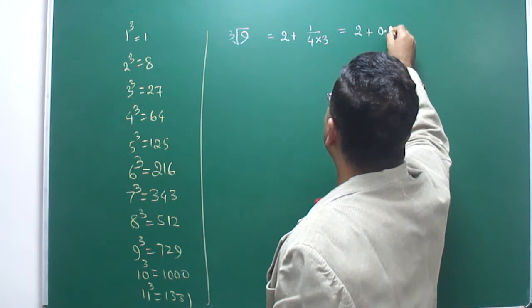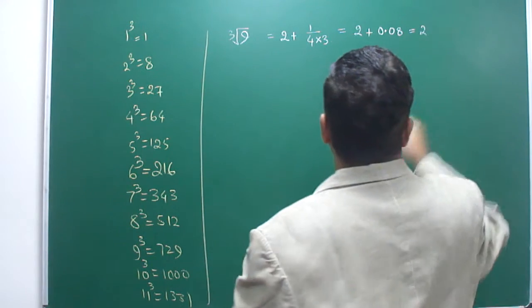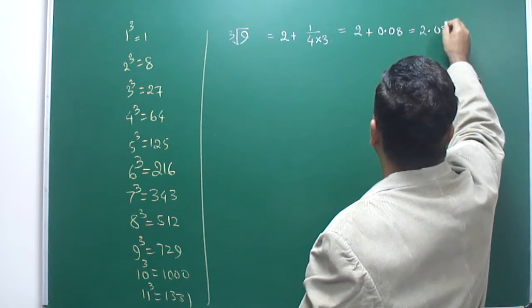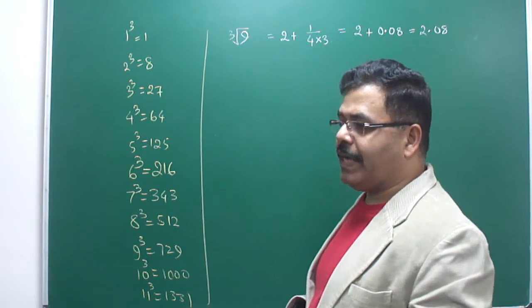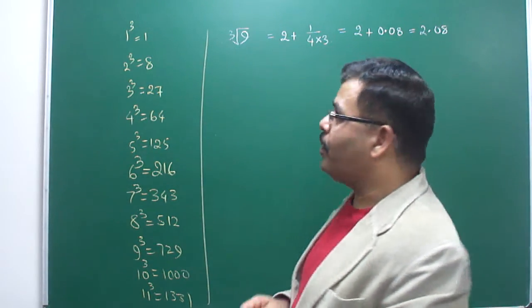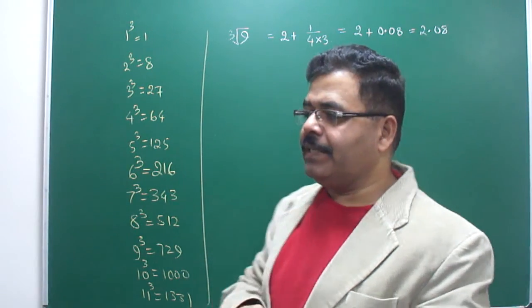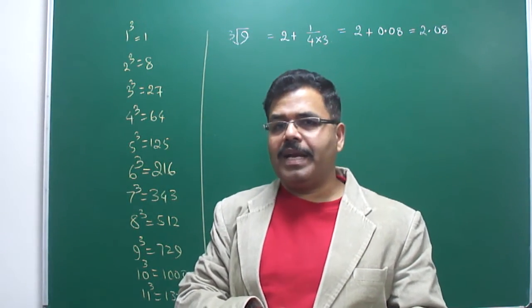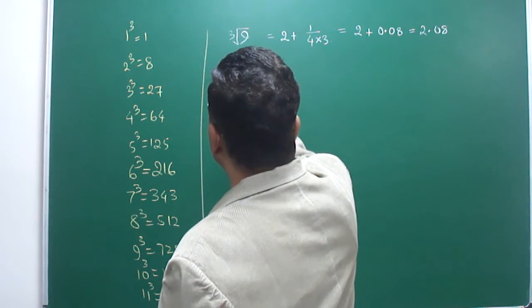So what will come? That will be 2 plus 1/12, which is nothing but 0.08. So the answer is 2.08 will be the cube root of 9. Got it? I hope you got it. This is very accurate up to two places of decimals.